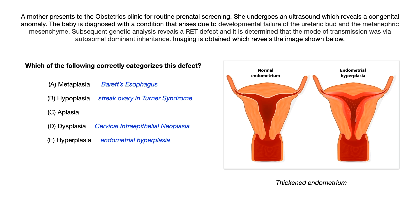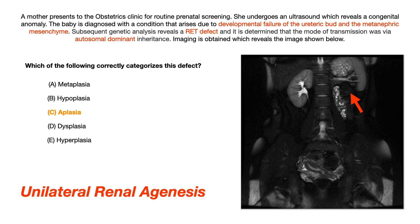To summarize: in this question, unilateral renal agenesis is an example of aplasia, and you should have been able to pick that out from both the vignette and the image in the question.